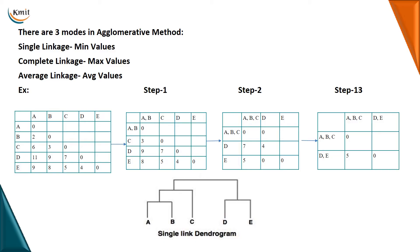For D: D with respect to A is eleven, D with respect to B is nine — so I take nine. For E: E with respect to A is nine, E with respect to B is eight — so I take eight. So here I'm taking the minimum values. In step two, I have combined three objects A, B, C and again I check with the first table, writing the minimum values.